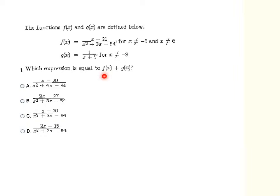Remember that f of x and g of x are just the names — that doesn't have anything to do with multiplication in this instance. Here they're asking us to add the function named f to the function named g. The extra information after is telling us about the domain: x can never equal 9 or 6 because that would make the denominators equal zero. So those values are excluded from our domain.